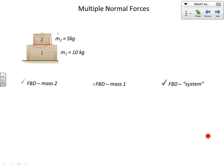Here's m2. What forces act on it? We have m2g, and what I'll call a normal force — I'll call it the normal force that object one exerts on two, or the normal force between object one and object two. That's what we have for object one.